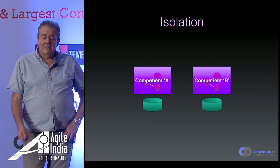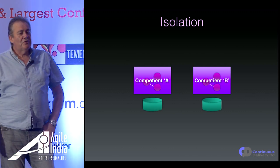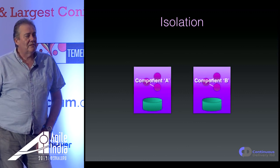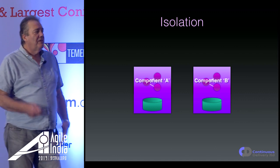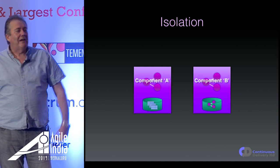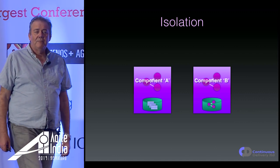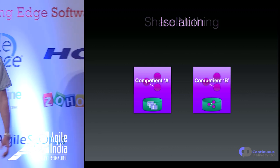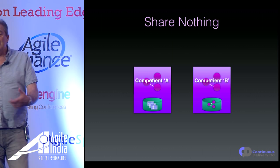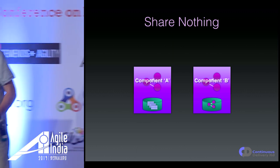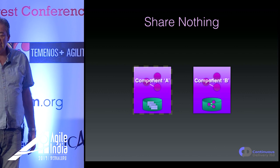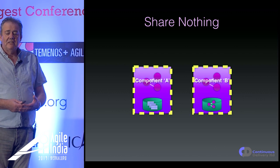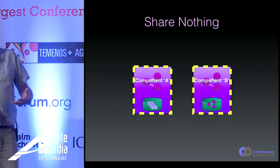What we can do instead is give each component its own data store, put that within the boundaries of the system. If one service needs a graph database, we implement a graph database; if one needs a column store, we implement that. It's down to the service. We need to aim to share nothing, and the boundaries of the service are inviolate — the only route in and out is via messaging.